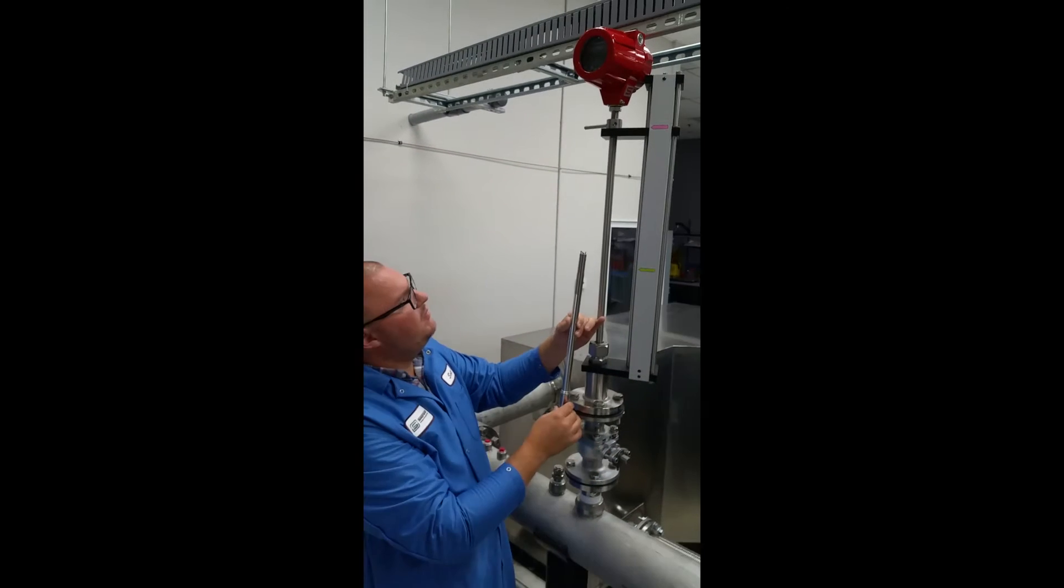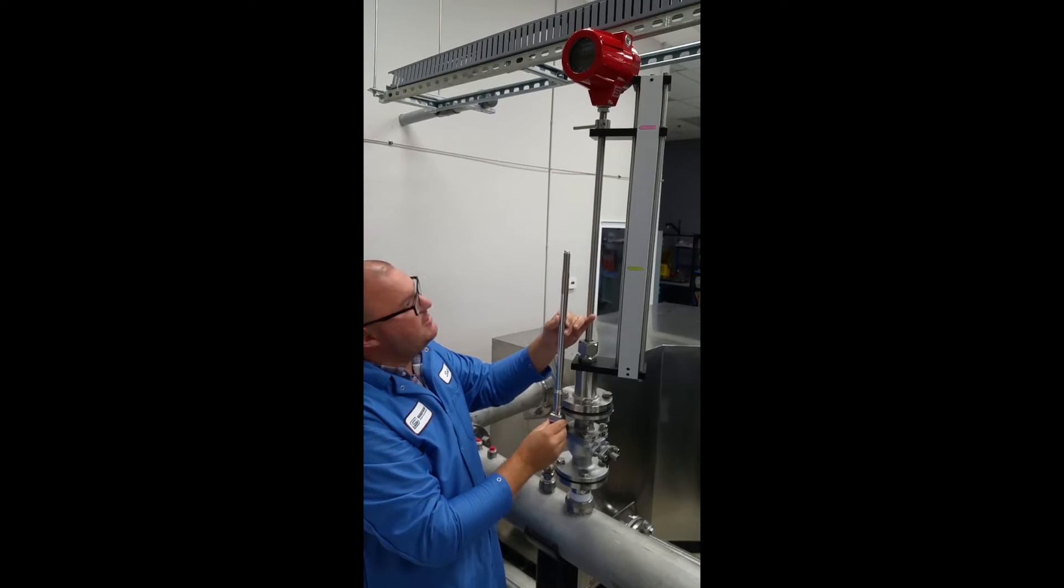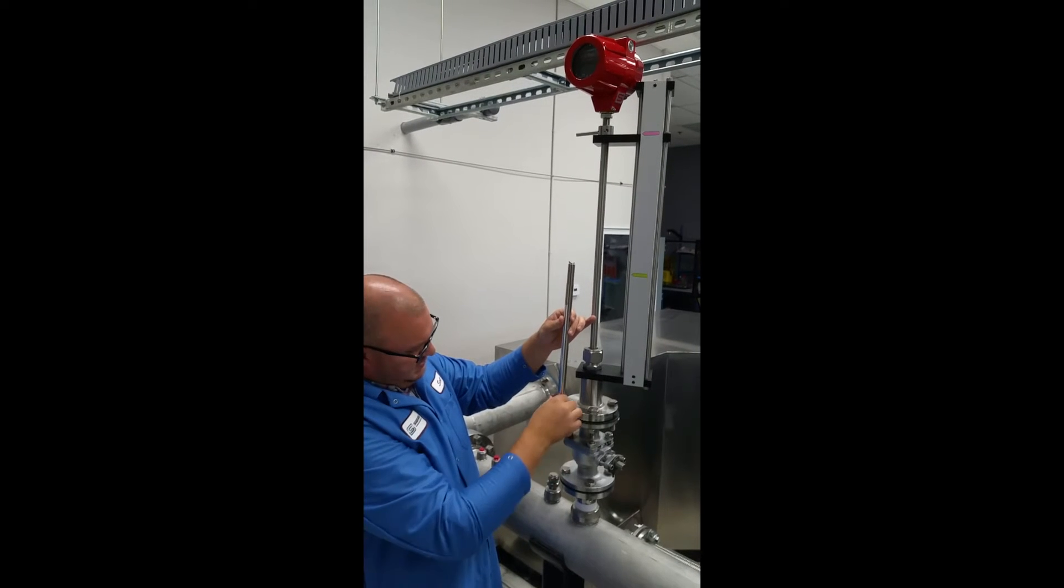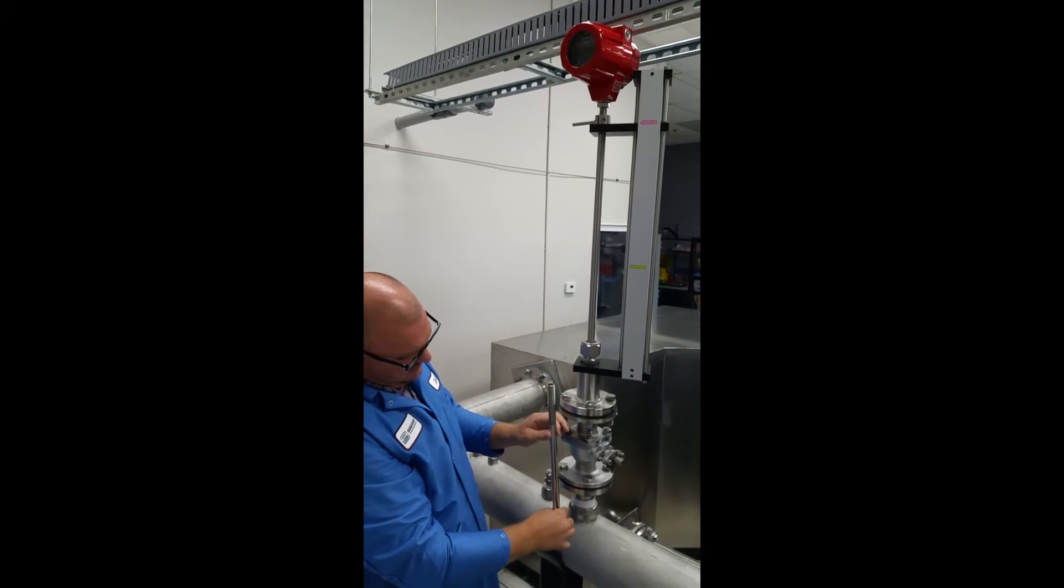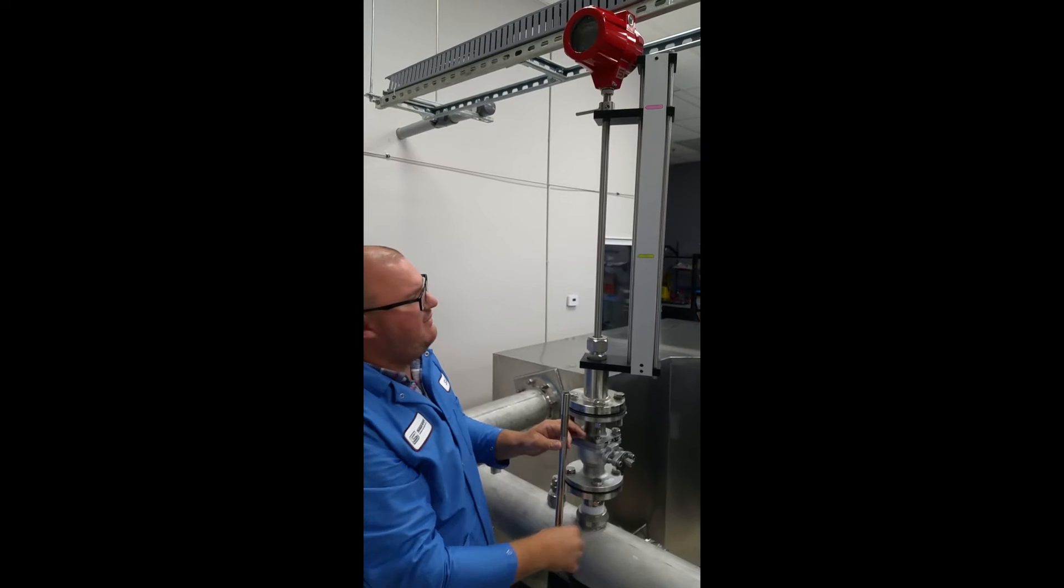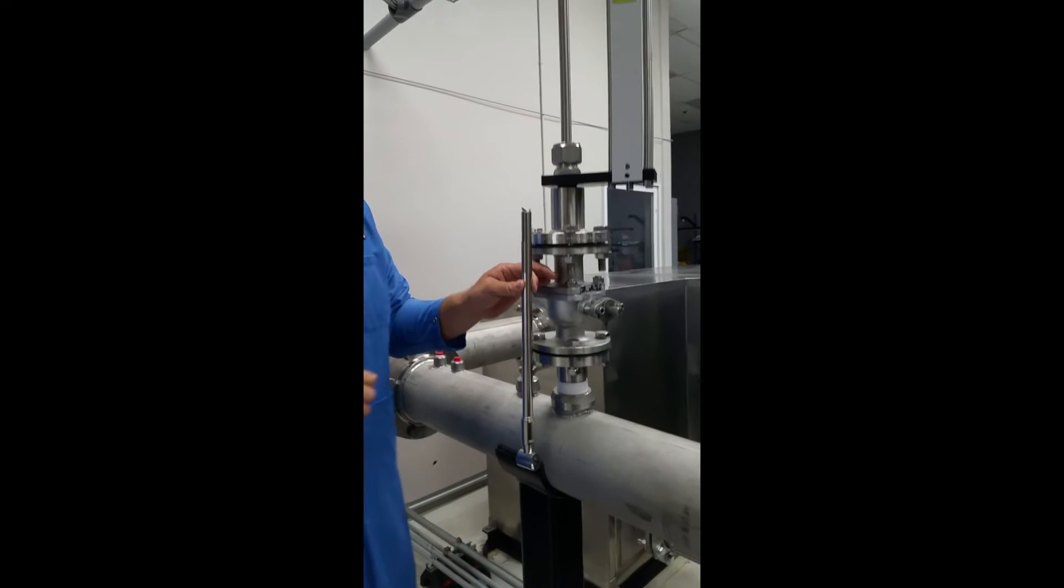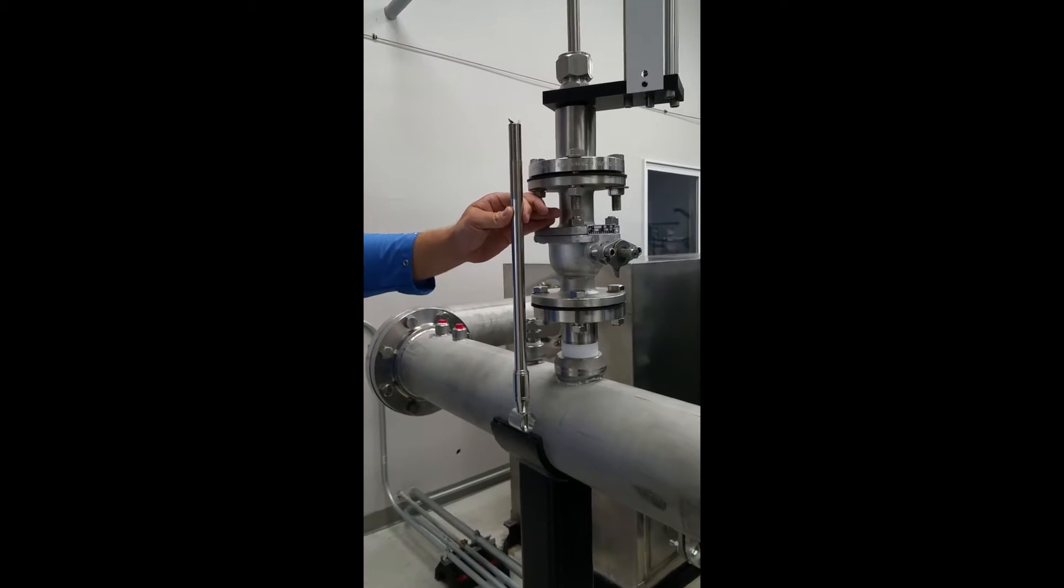When I actuate it down to the proper insertion depth, it's going to lower the probe down into the center of the pipe like that. And I've actually already marked that too which is right here. And it'll look something like that.